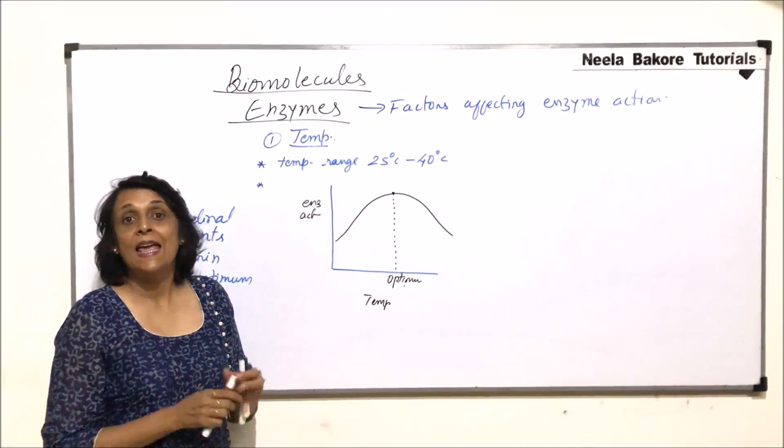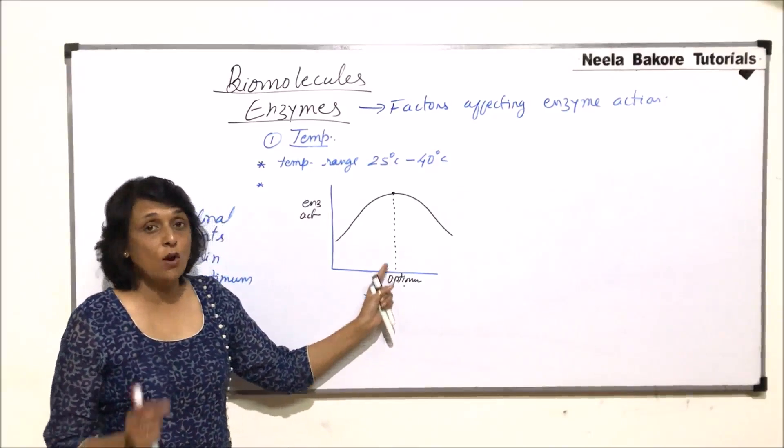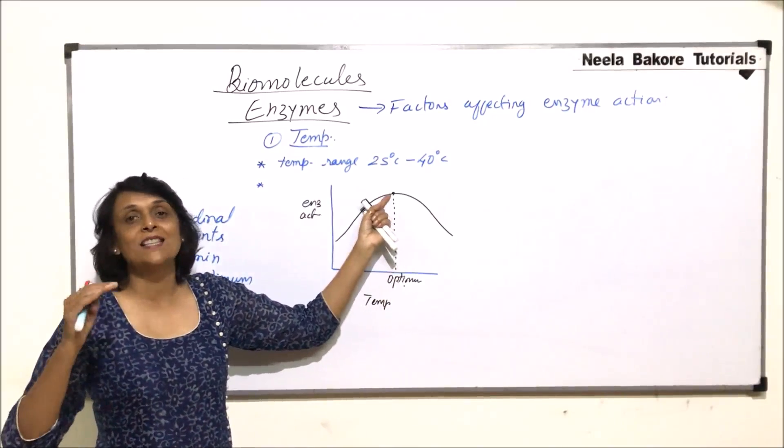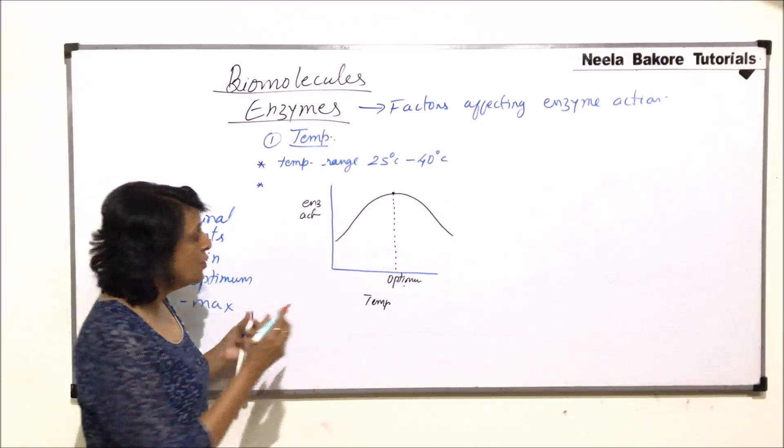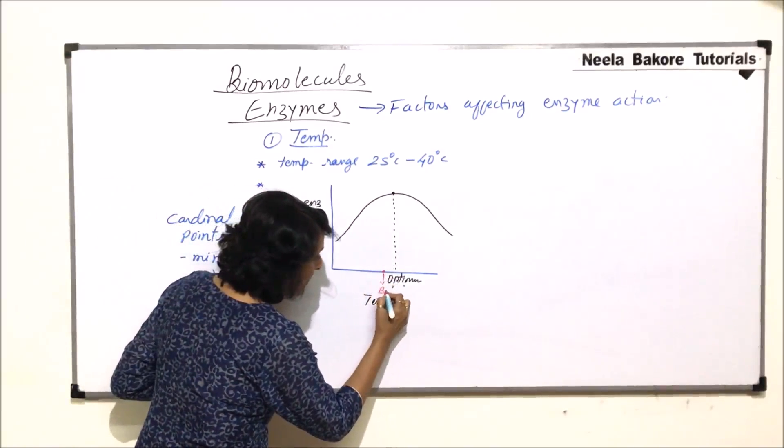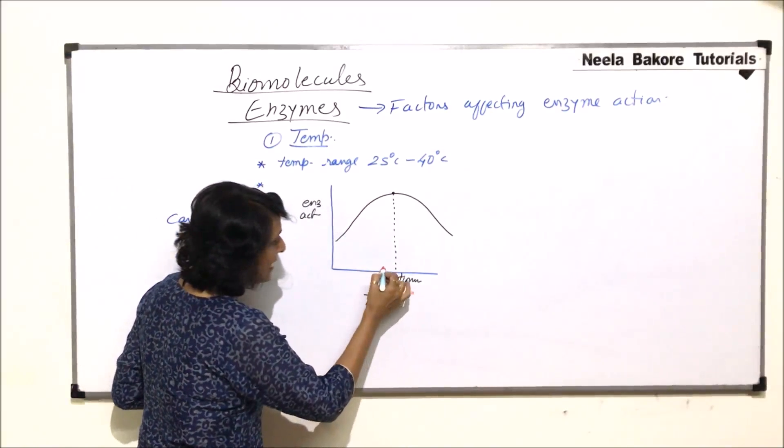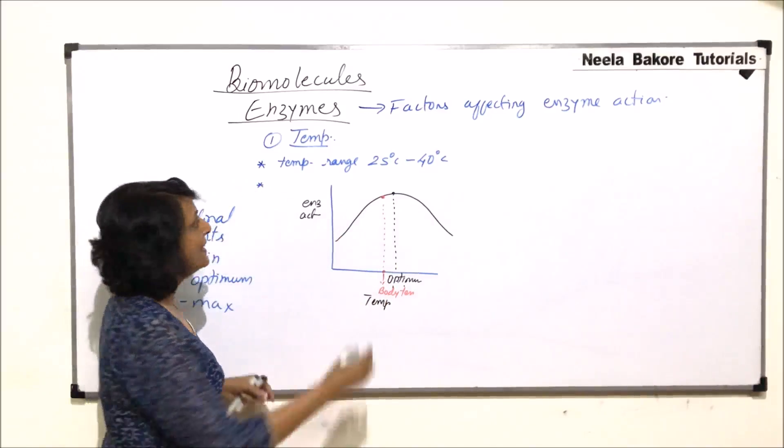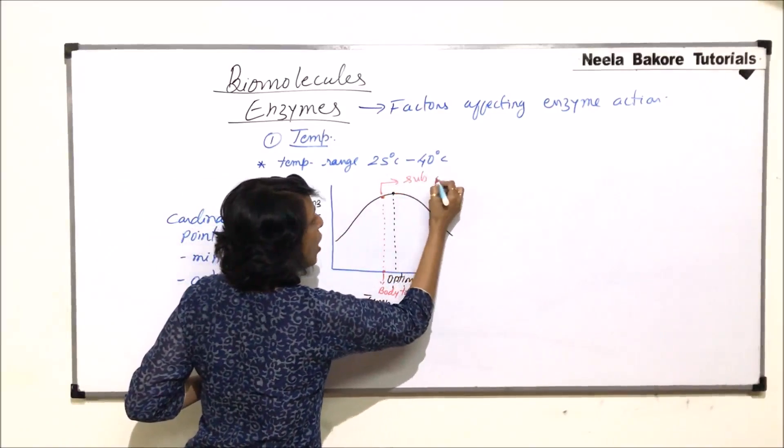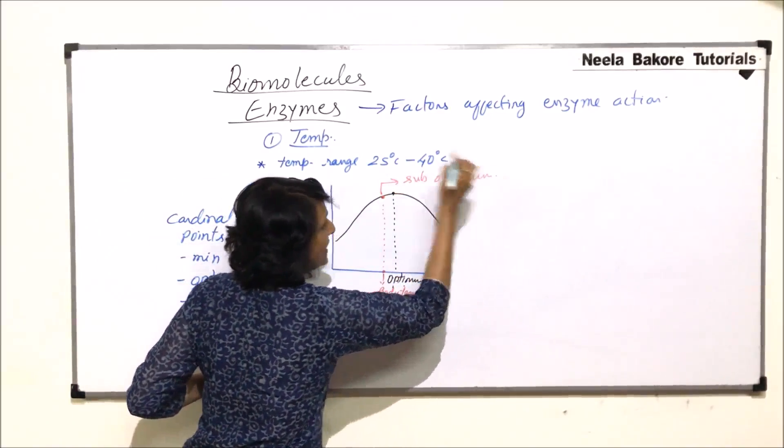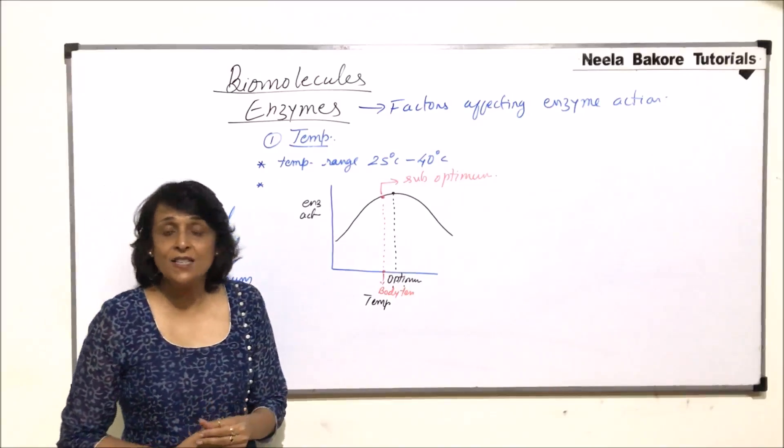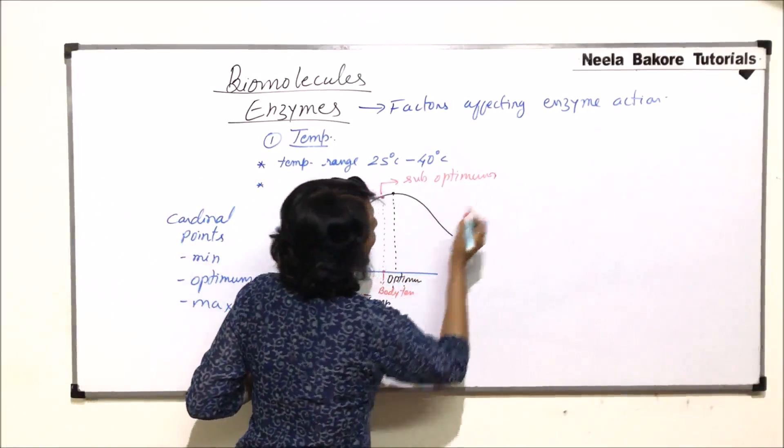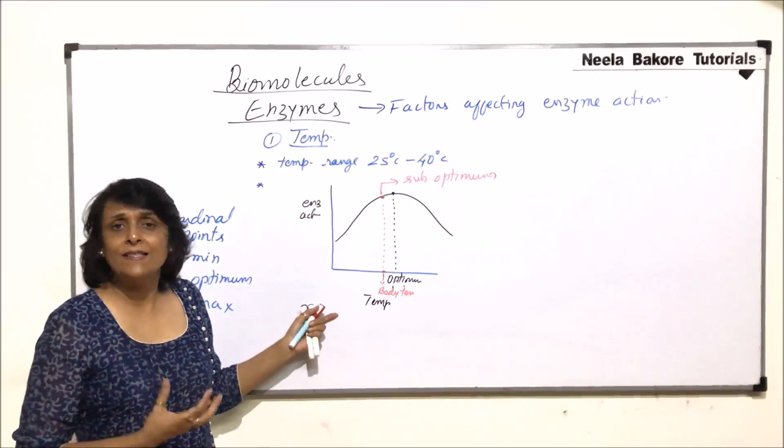The question which comes to our mind is, is our body temperature optimum? That means, is that the temperature where our enzymes are working at their maximum potential? The answer is no. This is our body temperature, and our enzymes are at this position. That means they are working at sub-optimum. And the reason why they are working at sub-optimum, because we don't need that much of enzymatic action for our enzymes to perform.